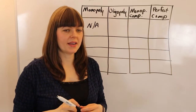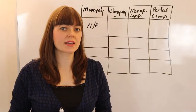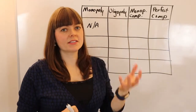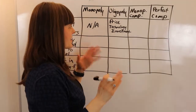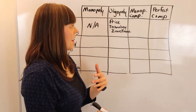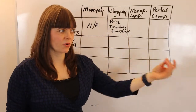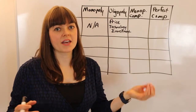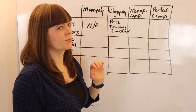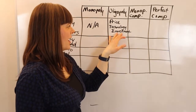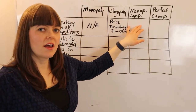For oligopolies, one thing they compete against their competitors for is price, and another is investment in new technology. Oligopolists can also compete along other dimensions like advertising — almost any decision a firm makes can be done strategically if they believe it gives them a market advantage. But the most classic decisions are price and how much to invest in innovation.